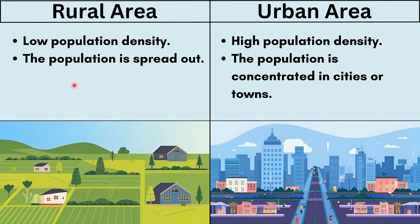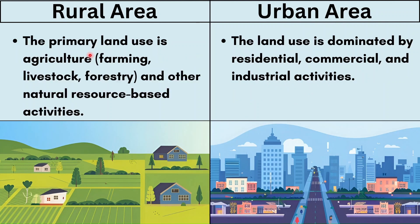The next difference is population density, which refers to the number of people per unit of area. In a rural area there is a low population density and the population is spread out. In an urban area there is a high population density — the population is concentrated in cities or towns.